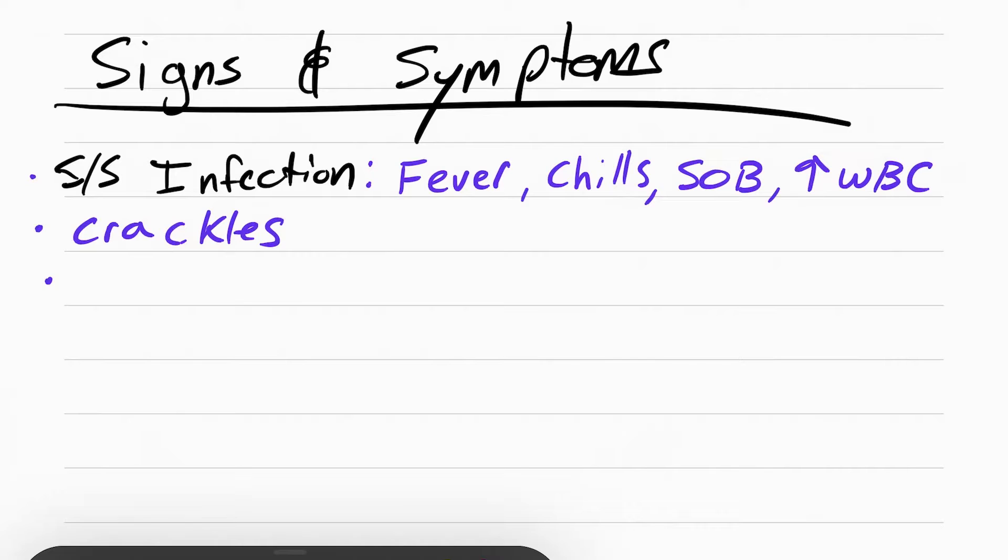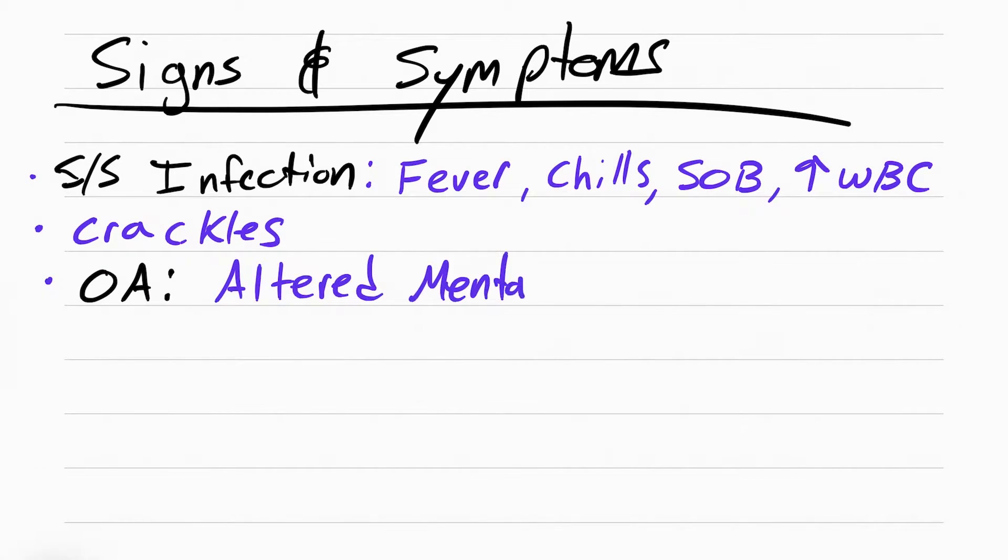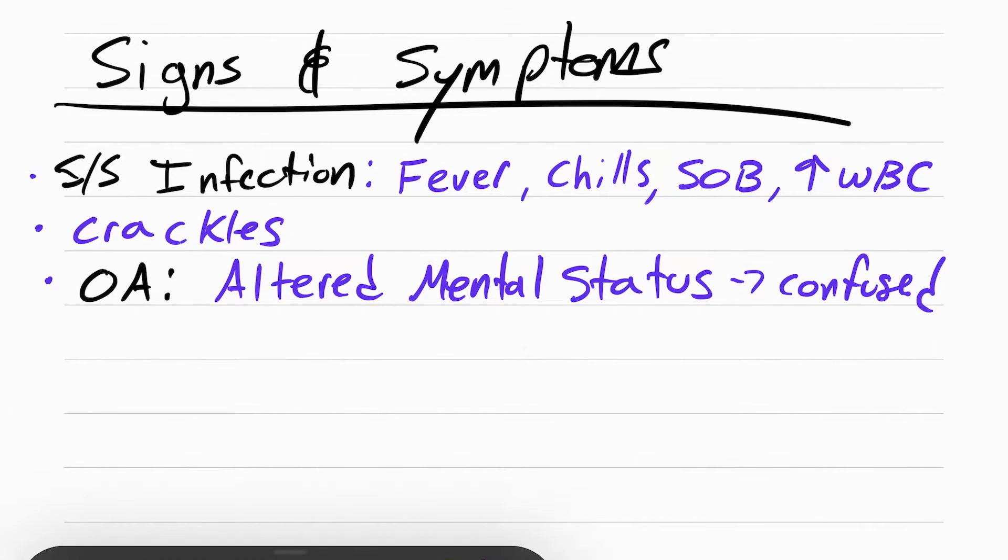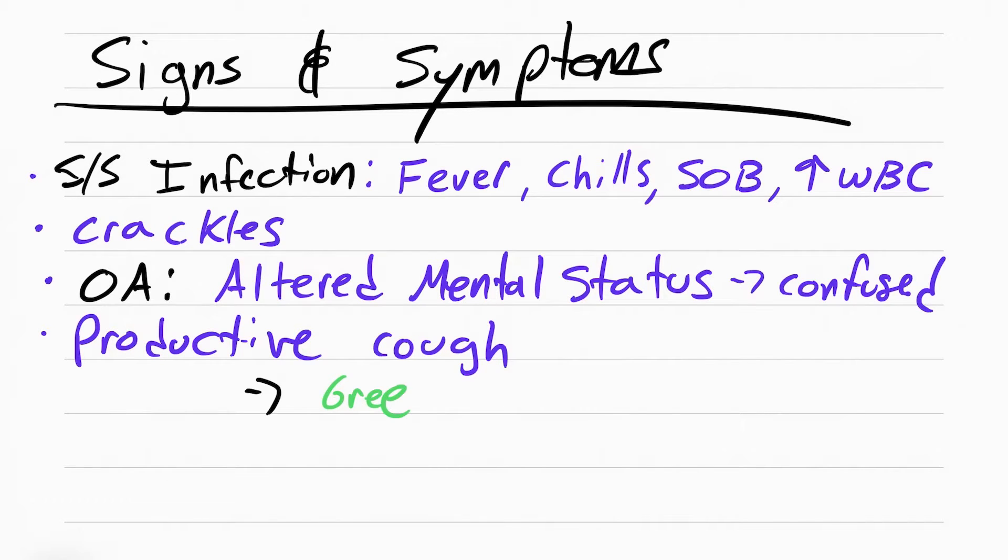Older adults can get altered mental status, which means they get confused. Sometimes older adults won't even spike a fever. The patient is going to have a productive cough - productive means something is coming out. That something is sputum, which can be green, yellow, or red, meaning it's bloody. Yellow or green means infection.